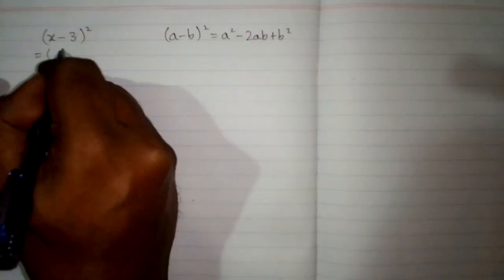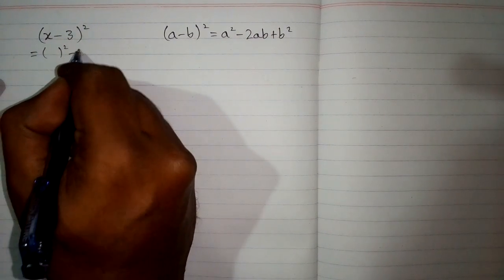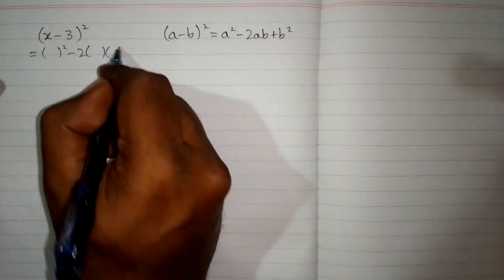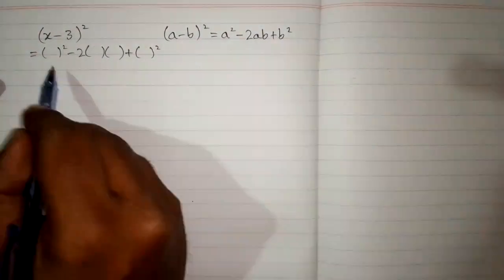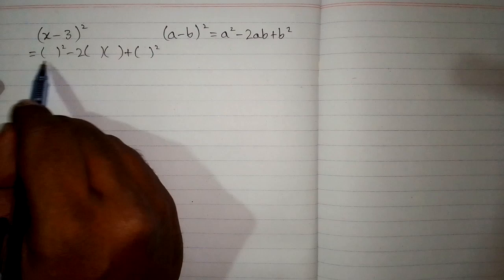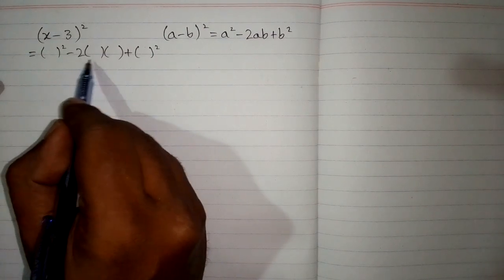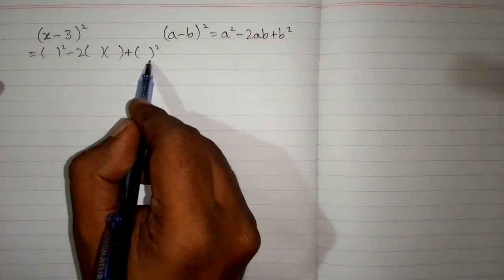So we will write the structure of the formula and we will place brackets in place of a and b. So that we have the structure of the formula which is a square minus 2ab plus b square.